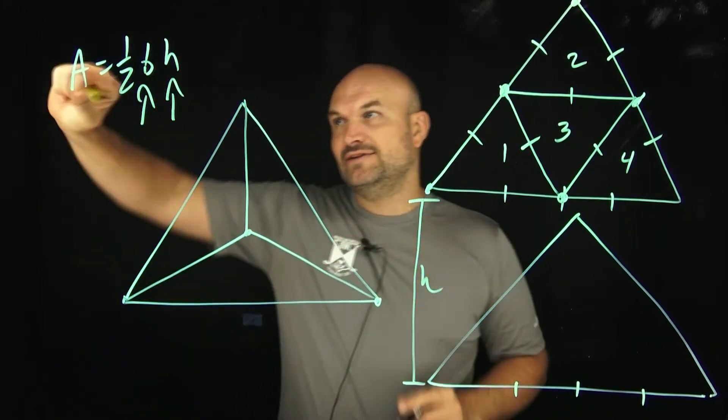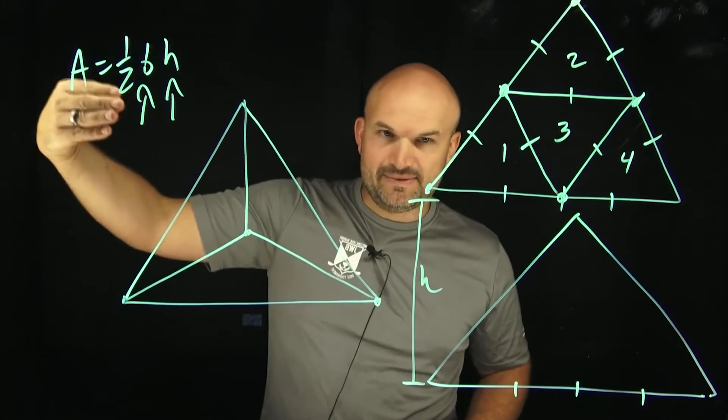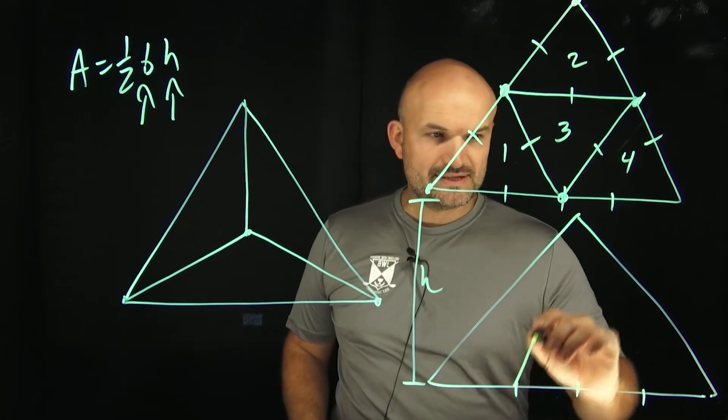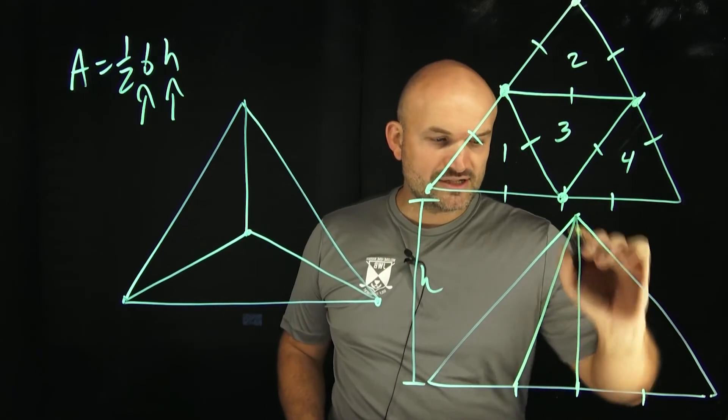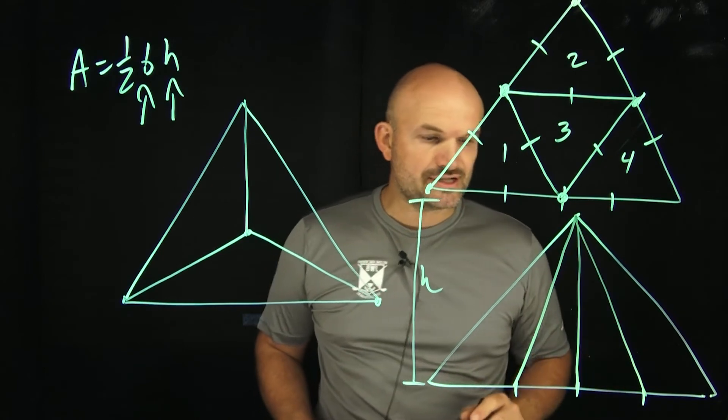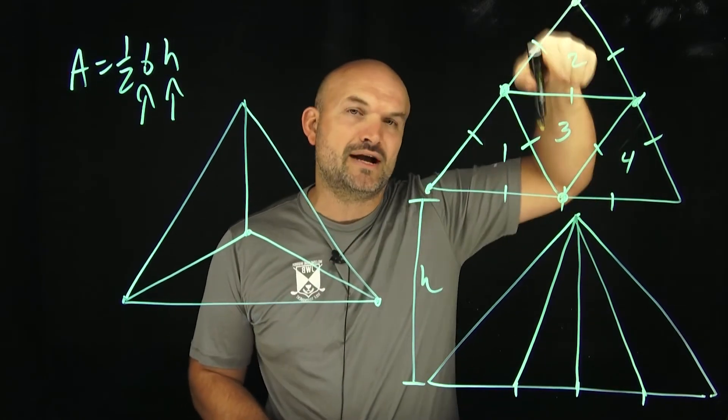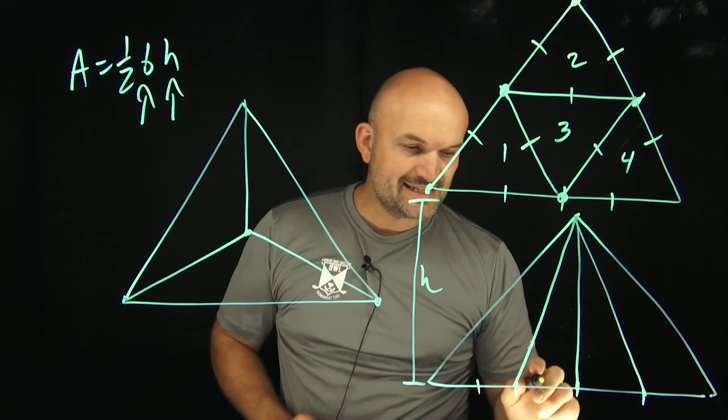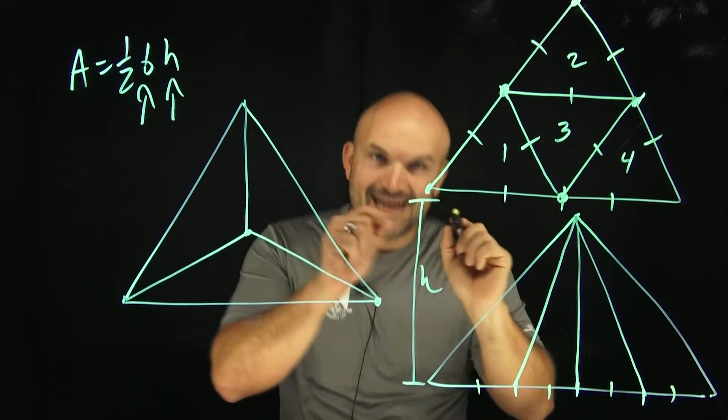All we need for the areas to be the same is the base to be the same and the height to be the same. So watch what happens now when I take my base and I partition it into four different sections. All these triangles do not look the same. They're not congruent like the triangle I had up here. However, the base is equal for all of these and height is equal.